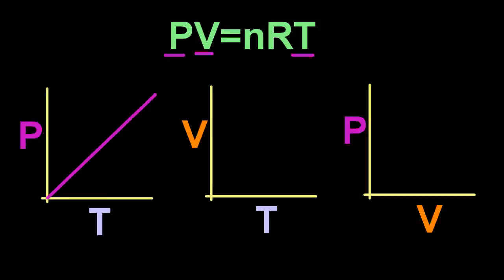So pressure versus temperature, directly proportional. Volume versus temperature, directly proportional. And pressure versus volume of an ideal gas is that curve there.